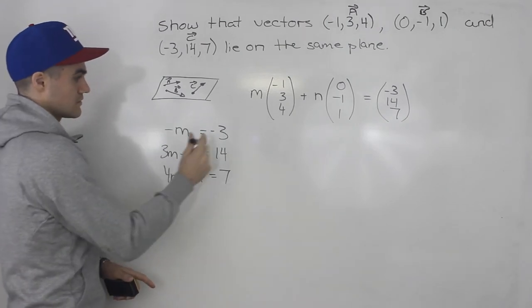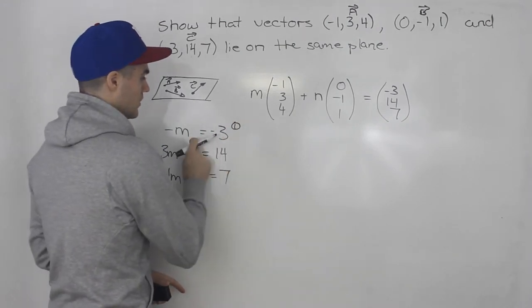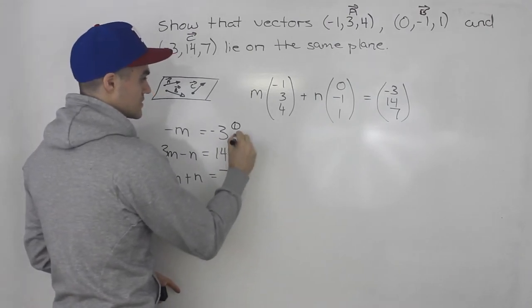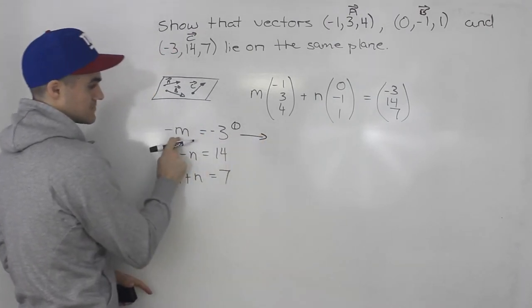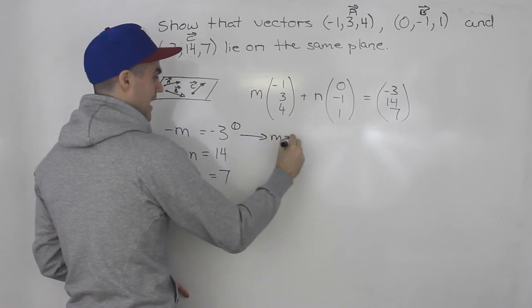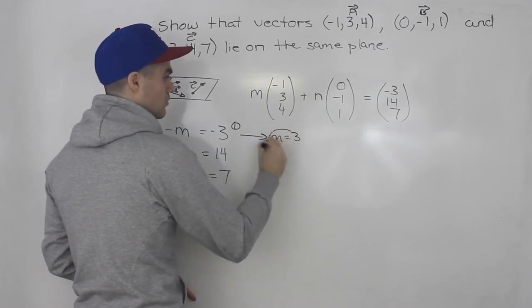So notice we're definitely going to use equation 1 because it's really easy to solve for m. We could just divide both sides by -1, and we know right away that m is just equal to 3.